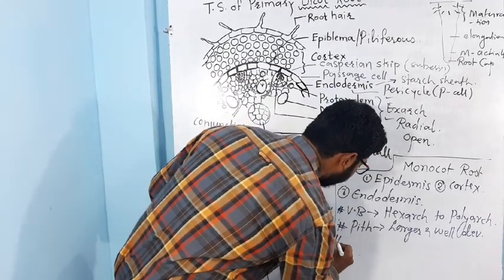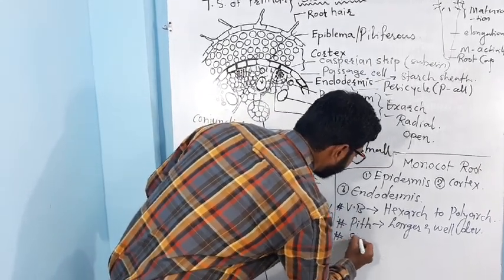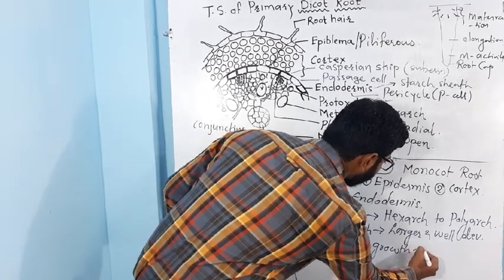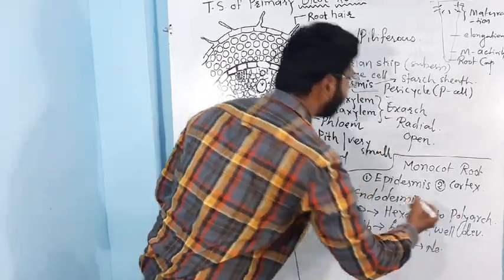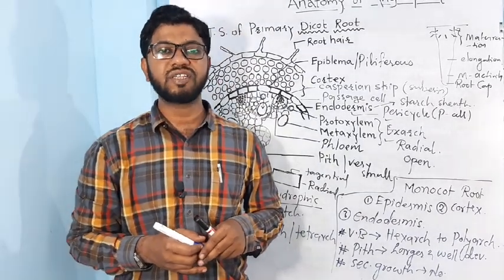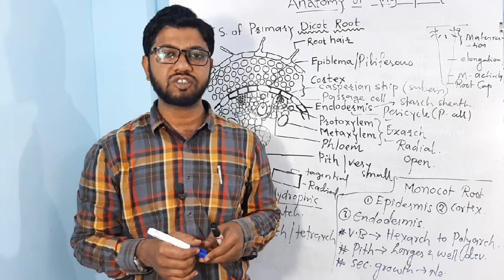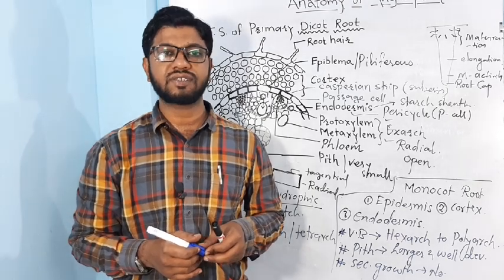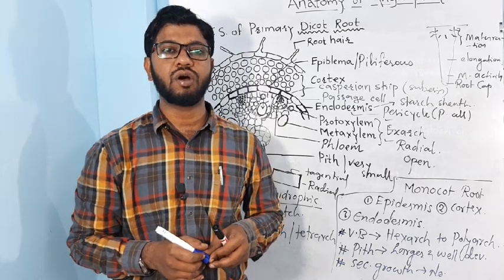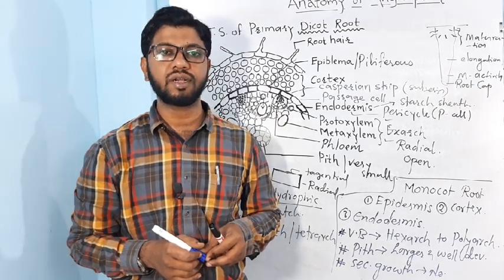The third difference is according to secondary growth. No secondary growth takes place in monocot root. This is all about the anatomical comparative structure of dicot root as well as monocot root. In the next slide, we are studying the comparative structure of dicot stem and monocot stem. Thank you.